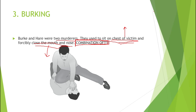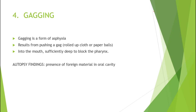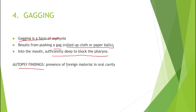The next topic is gagging. Gagging is a form of asphyxia that involves introducing tightly packed material into the oral cavity so as to obstruct the airways. A gag is a rolled-up cloth or paper ball. Autopsy findings are the same as those of smothering, except that foreign material such as a handkerchief, sari, or bed sheet will be found in the oral cavity — that is the specific autopsy finding.